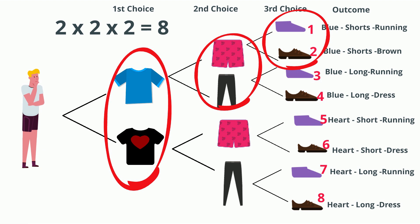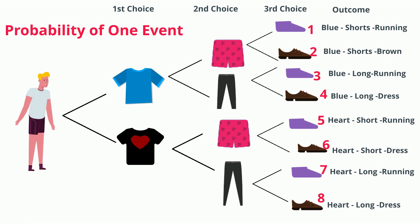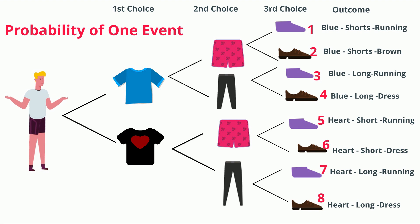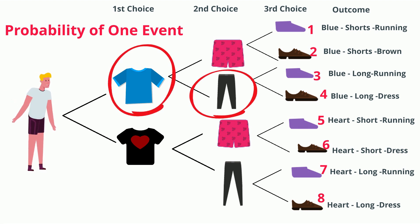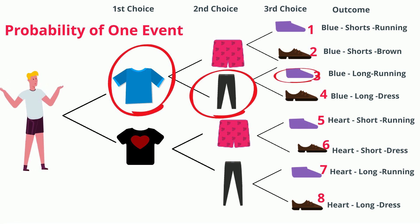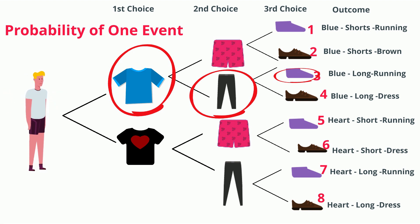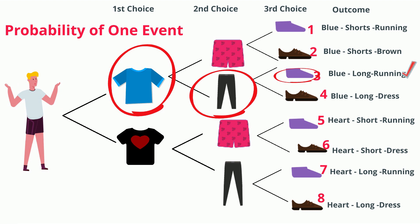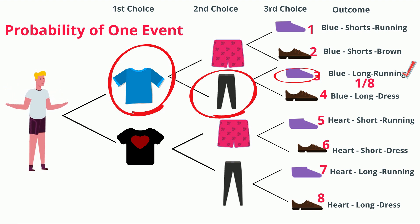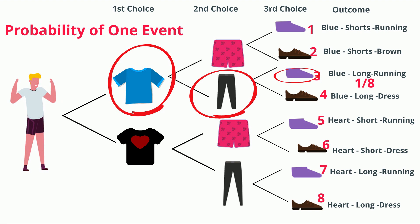Now let's figure out the probability of one event. What's the probability that John will choose a blue shirt, long pants, and purple running shoes? Well, if you notice, there is only one outcome of this. So it is 1 divided by 8, because 8 is your total. And here's your probability.